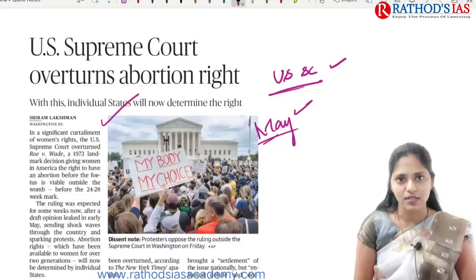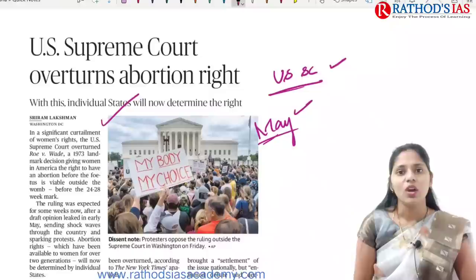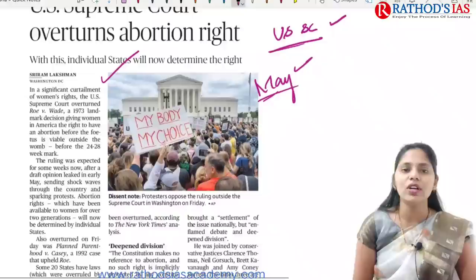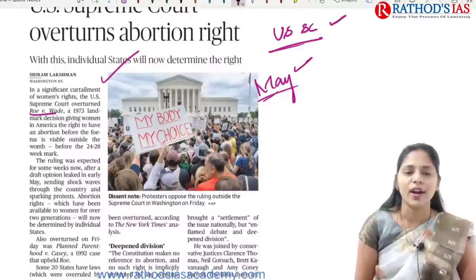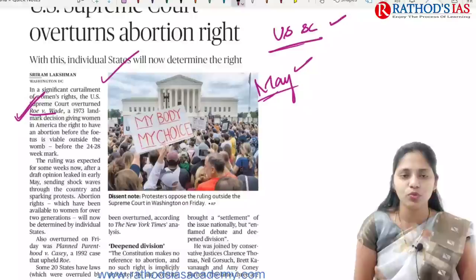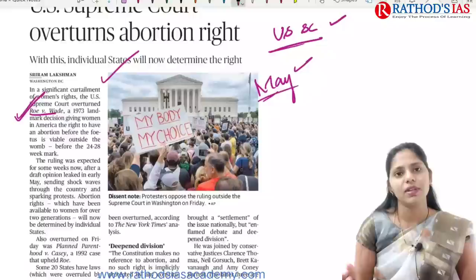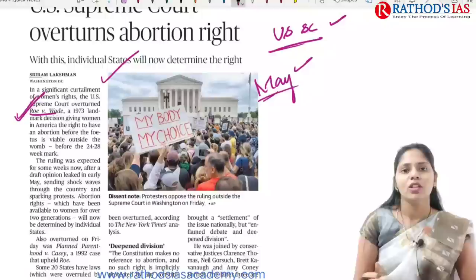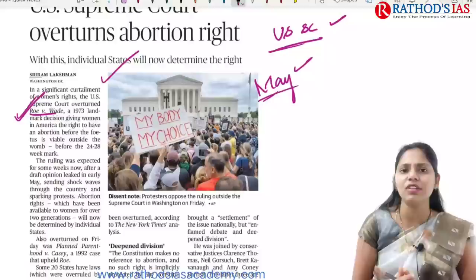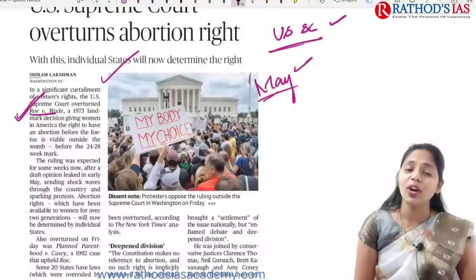Let's see what this case is about, its implications, and what the Roe vs. Wade judgment says. We will also talk about the Mississippi law. In 1973, the Roe vs. Wade judgment gave abortion rights for women — they could go for abortion till fetal viability, meaning the point when the fetus can survive outside the womb, normally around 28 weeks. Due to recent advancements, fetal viability can now be seen between 23 to 24 weeks.